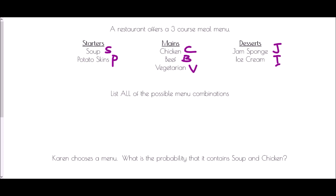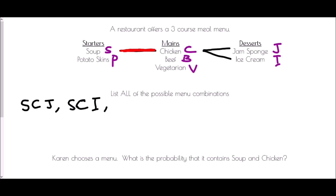I'll begin with the situation where I chose soup as the starter. With soup and chicken I could choose jam sponge, giving S-C-J, or keeping soup and chicken I could choose ice cream, giving S-C-I. Now sticking with soup but choosing beef, soup with beef can also have those same two dessert choices: soup-beef-jam sponge and soup-beef-ice cream.